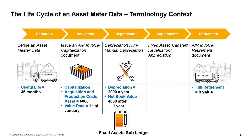Let us look at the life cycle of an Asset Master Data with reference to standard accounting terminology, highlighted in blue in the slide. In our example, when we define the new truck that OEC Computers purchased, we define the asset's useful life — the period during which an asset is expected to be usable for the purpose for which it was acquired. Useful life may or may not correspond with the asset's actual physical life or economic life.